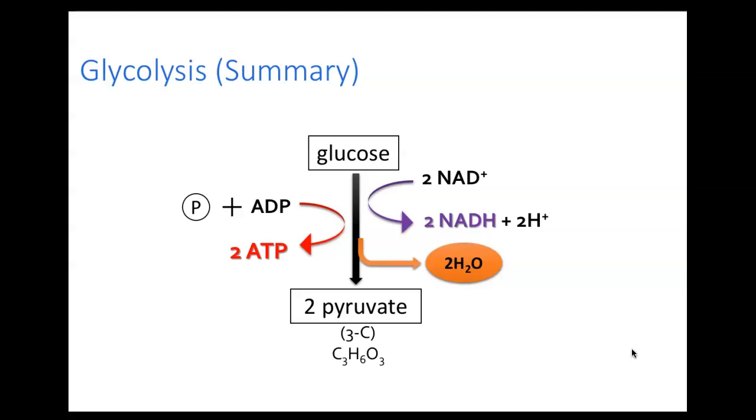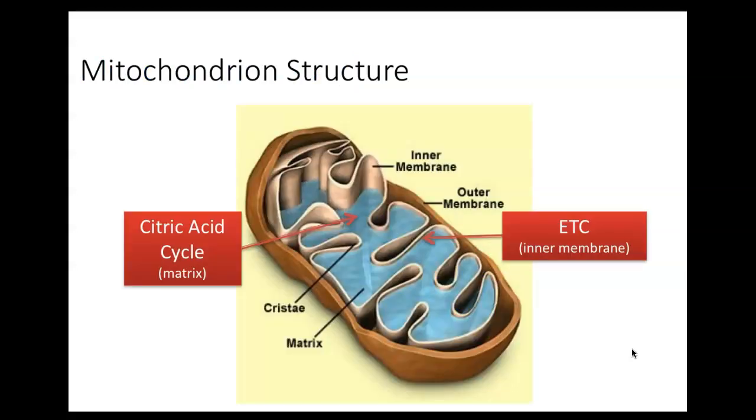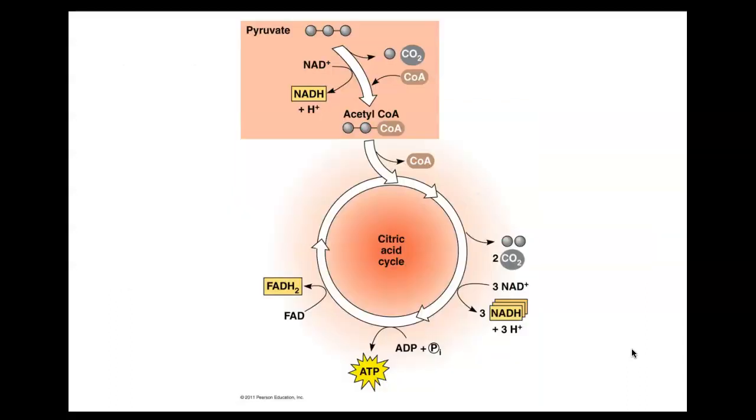Then you have a couple of NADHs, and then water is a waste, and then two pyruvates. Alright, then pyruvate is going to travel into the mitochondria. As pyruvate travels into the mitochondria, it gets converted into acetyl-CoA. NAD, which is our electron shuttle, remember it's picking up electrons and hydrogens, taking them over to the electron transport chain, which is our third phase. A little carbon dioxide is given off as a waste.